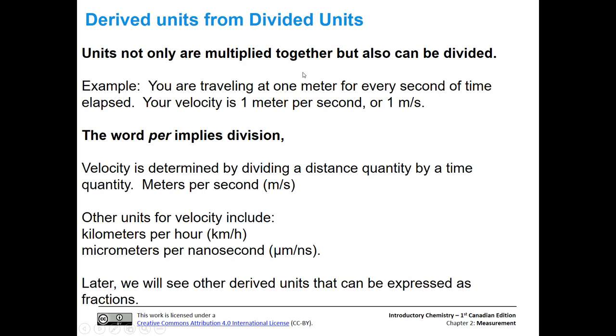Units can be multiplied together, but they can also be divided. When we divide units, we're going to get a per situation. For instance, if we're traveling at one meter for every second of time, then our velocity is going to be one meter per second. The word per implies division. So velocity is dividing a distance quantity by a time quantity, meters per second. Other units for velocity include kilometers per hour, micrometers per nanosecond. We'll see that other derived units will be expressed as fractions also later in the course.